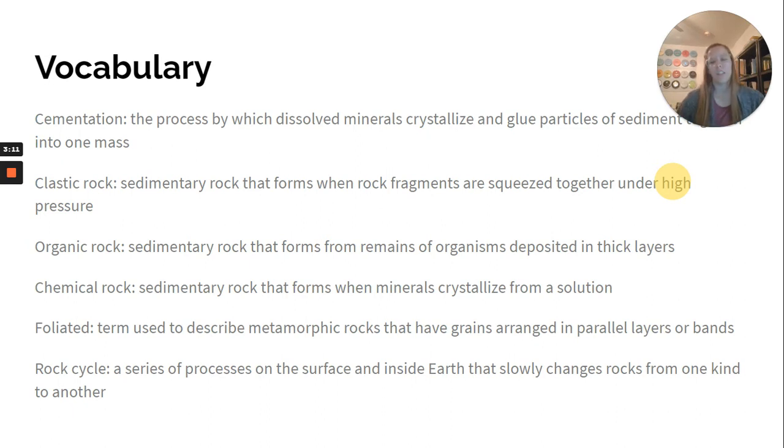Foliated: a term used to describe metamorphic rocks that have grains arranged in parallel layers or bands. And the rock cycle: a series of processes on the surface and inside Earth that slowly changes rocks from one kind to another.